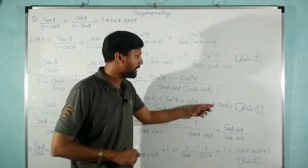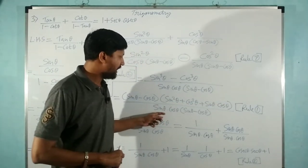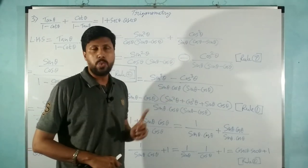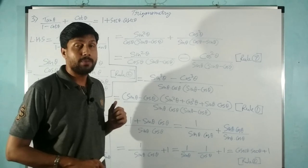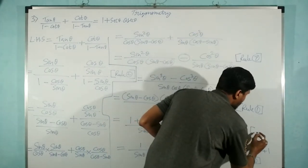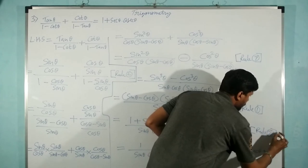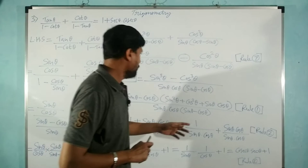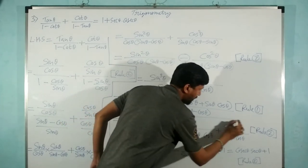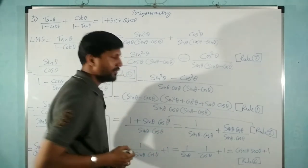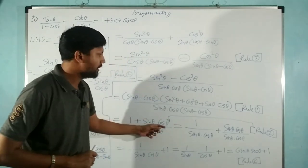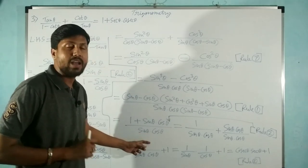What remains is sin² θ + cos² θ + sin θ · cos θ in the numerator, and sin θ · cos θ in the denominator. Using rule number 2 — trigonometric identities — sin² θ + cos² θ = 1. So the numerator becomes 1 + sin θ · cos θ, and the denominator is sin θ · cos θ.